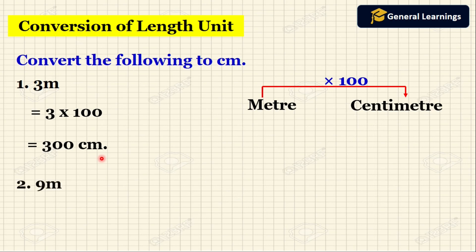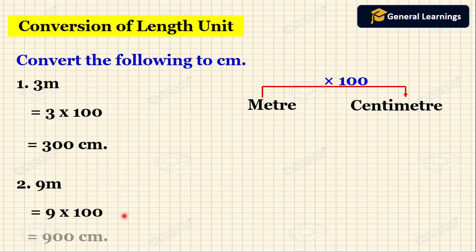Now we will see another example. Here they have given 9 meters. So we are going to convert this meters to centimeters. We need to multiply 9 by 100 to get 900 centimeters.